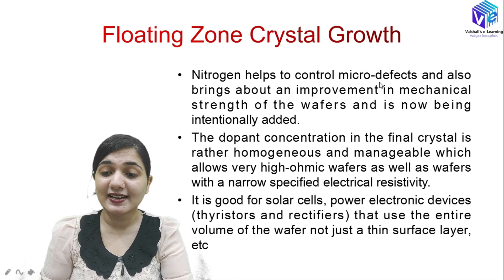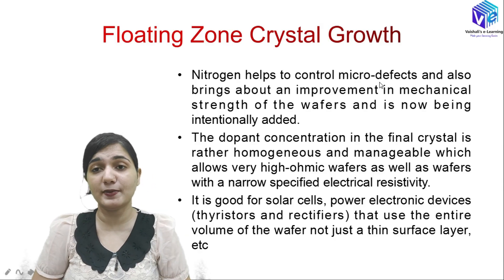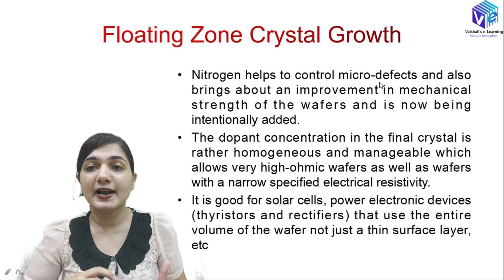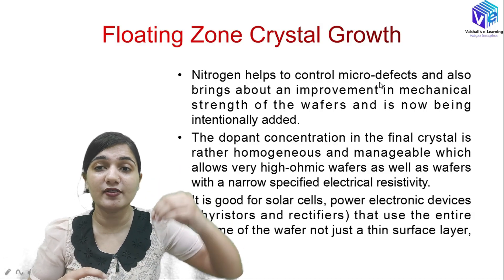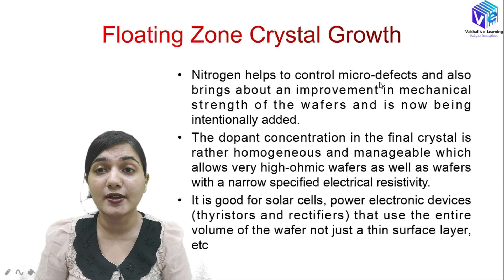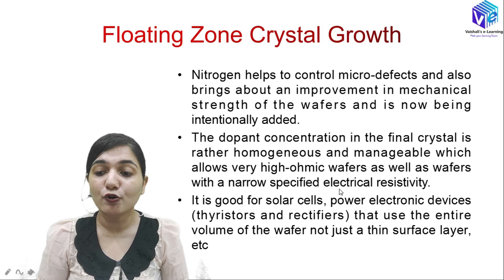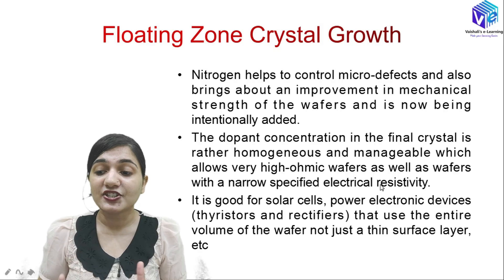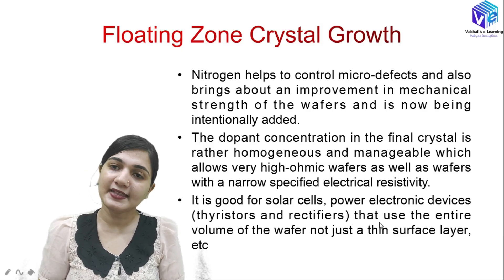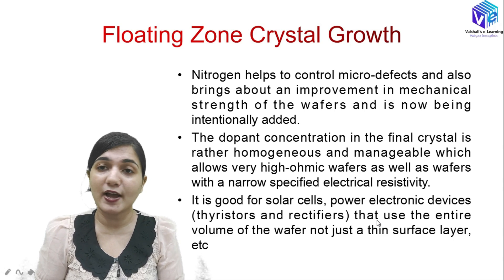The dopant concentration in the final crystal will be homogeneous. In the CZ technique we cannot have homogeneous dopant concentration — the melt has higher impurities while the solid ingot has fewer and they are non-homogeneous. In floating zone crystals we have homogeneous and manageable impurities in the ingot. This allows very high ohmic wafer production as well as wafers with very narrow electrical resistivity, giving us excellent control over all electronic properties.